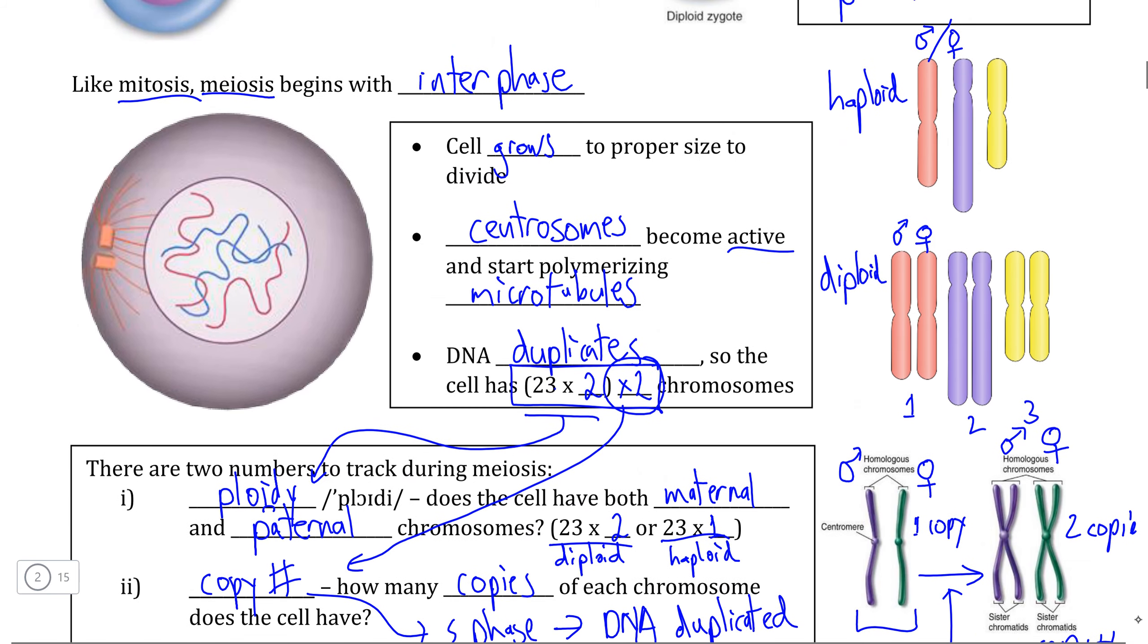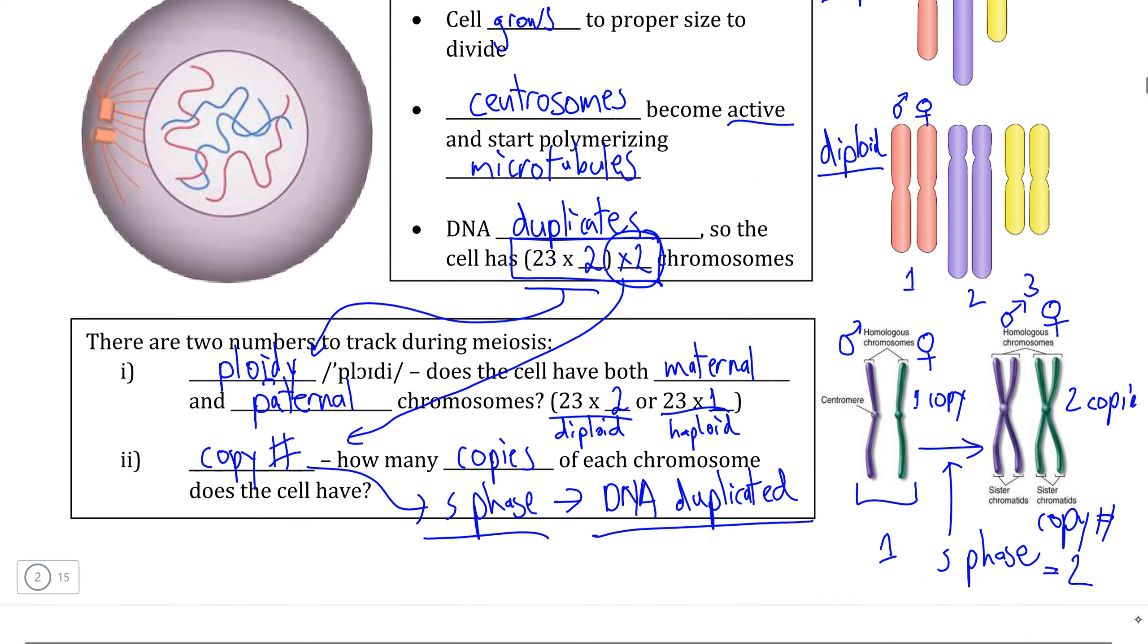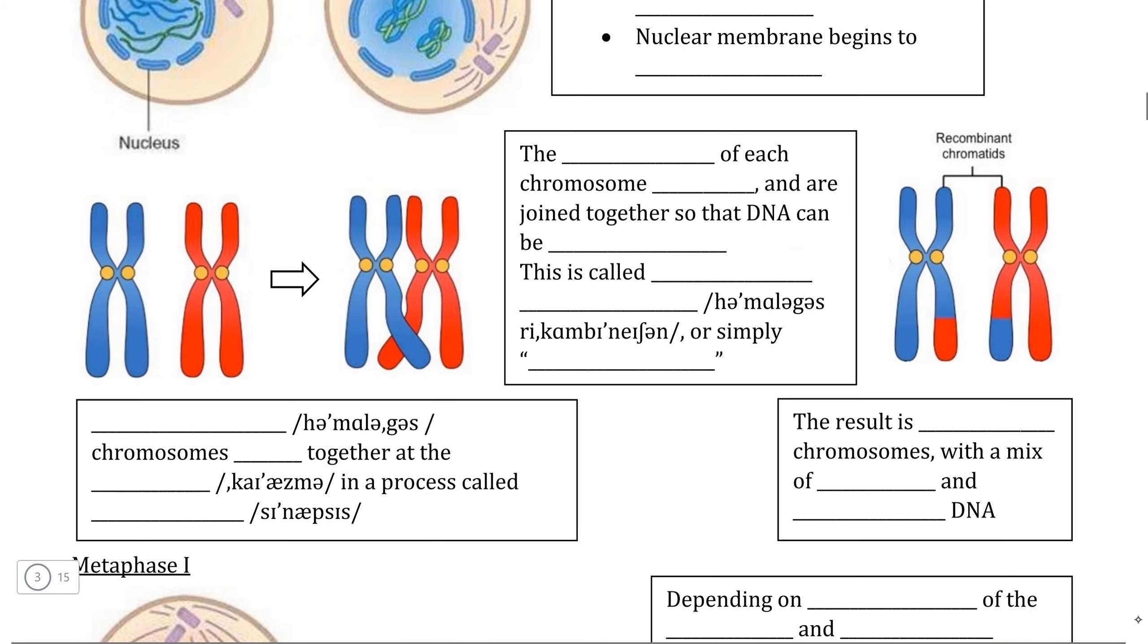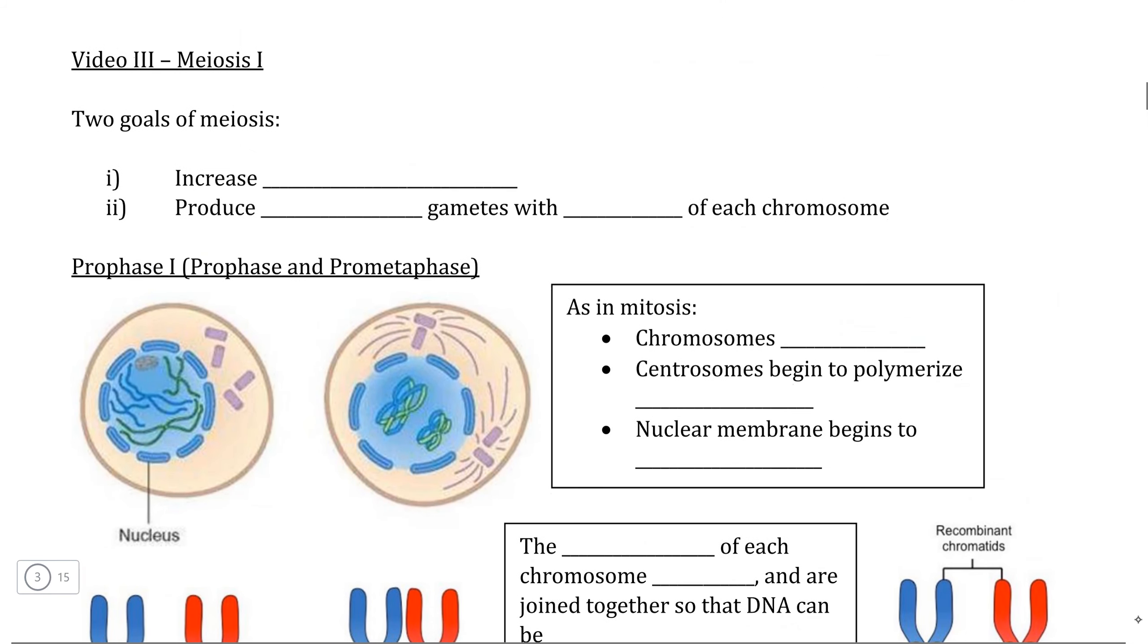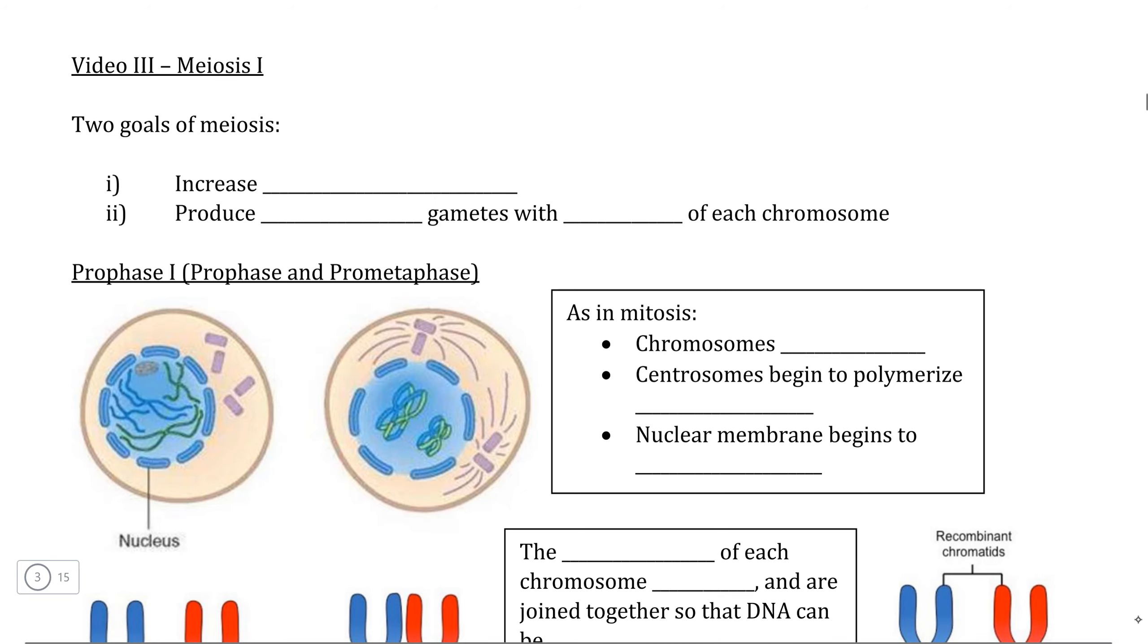In the next video, it's very important that you're able to distinguish between ploidy, is a cell haploid or is a cell diploid, and copy number whether a cell has duplicated its DNA or whether it only has one copy of each chromosome. In the next video, we're going to be taking a deep dive at each of the individual phases of meiosis, paying strict attention to when these cells go from being diploid and when they become haploid and can therefore function as gametes.